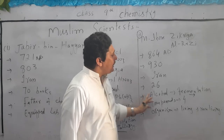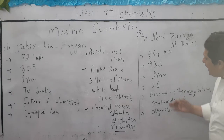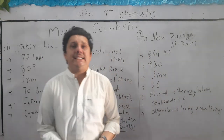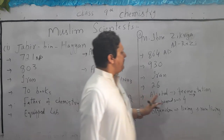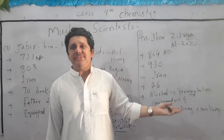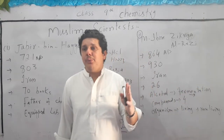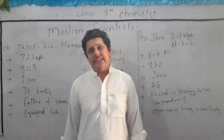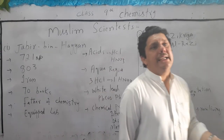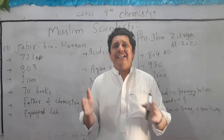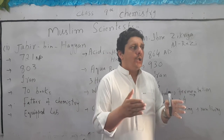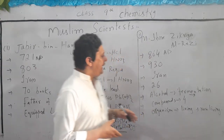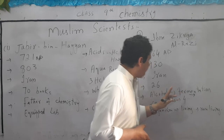He prepared alcohol for the first time by the process of fermentation. What is fermentation? Fermentation is the process in which organic compounds are decomposed by the action of microorganisms into simple substances. For example, an organic compound like glucose is broken down by microorganisms into simpler substances.